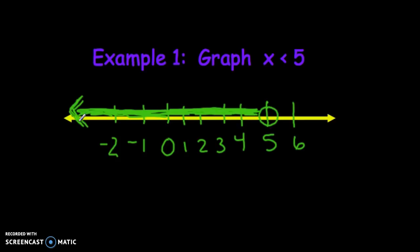If you want to do a quick check, you can check some numbers in that area like 4. 4 is less than 5, that's true. Negative 2 is less than 5, that's true. All these numbers work. If you try something on the right like 6 and you say 6 is less than 5, that is not true. So it should not be shaded.